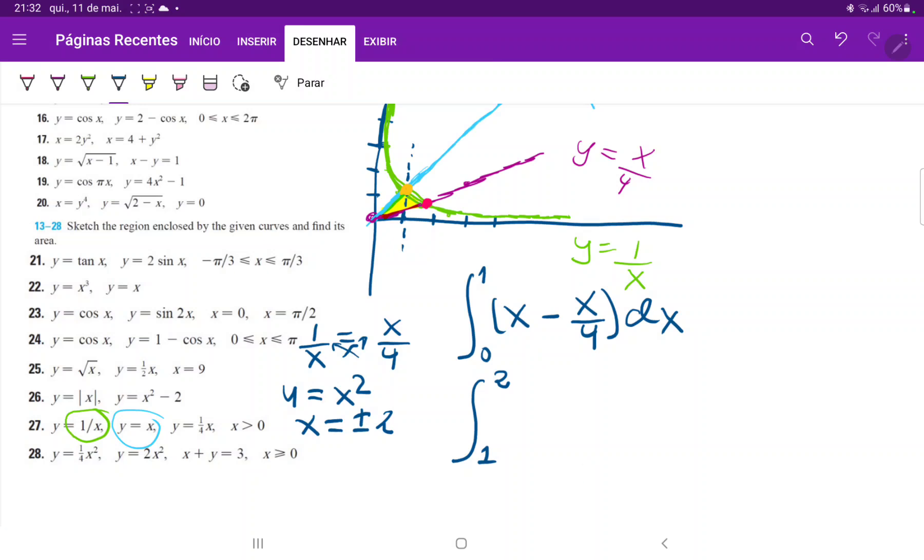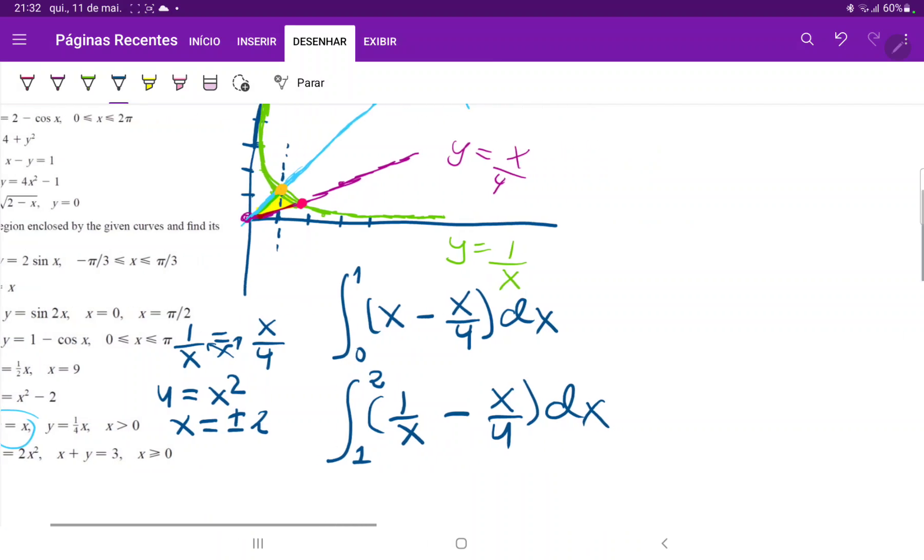So our solution is that x equals 2. And now this integral, the upper function is the green one. So 1 over x and then minus the lower function, minus x over 4, times dx.